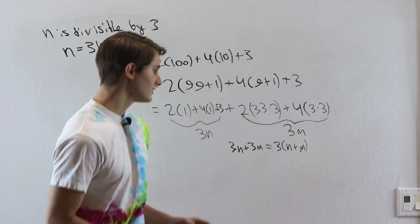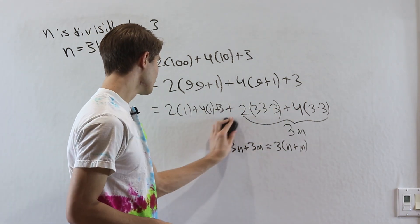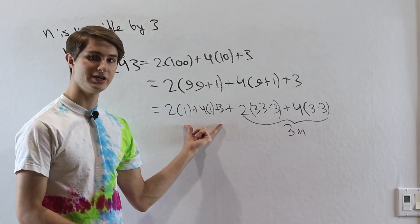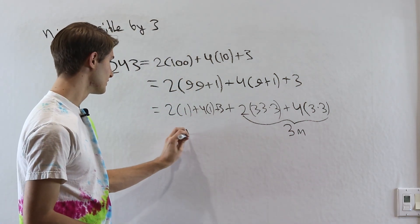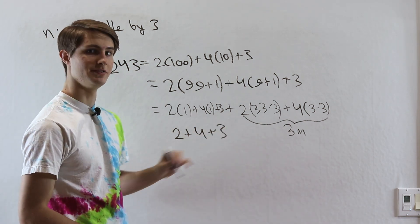That means that we can basically ignore all of this stuff over here and just focus on what we have on the left side of our expression: 2 plus 4 plus 3. This is the sum of the digits.